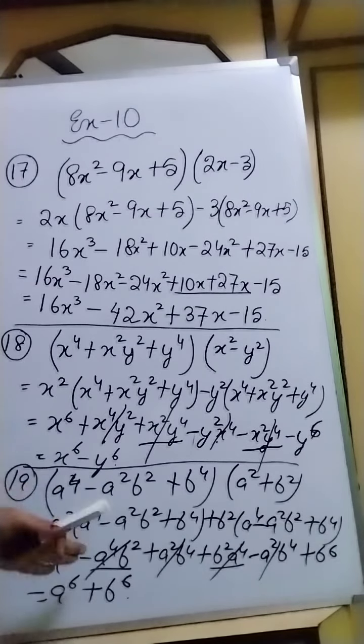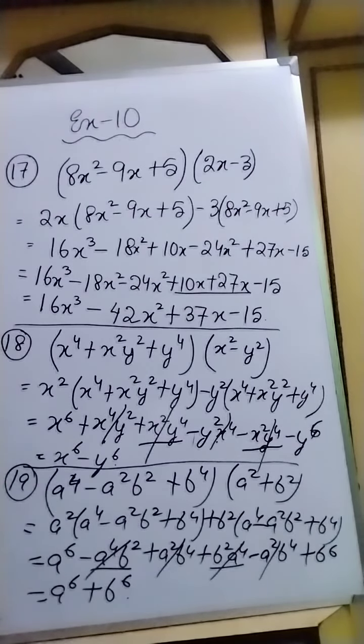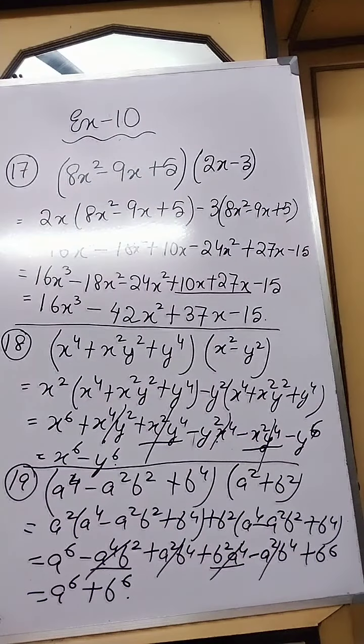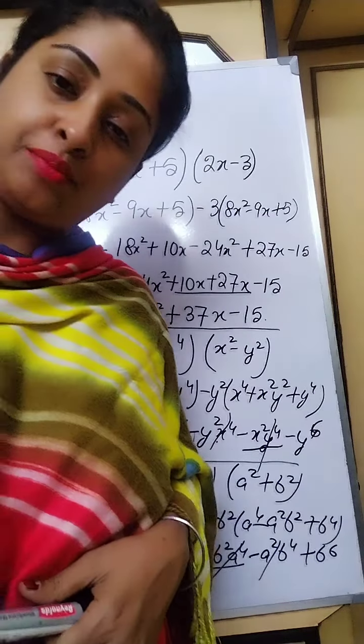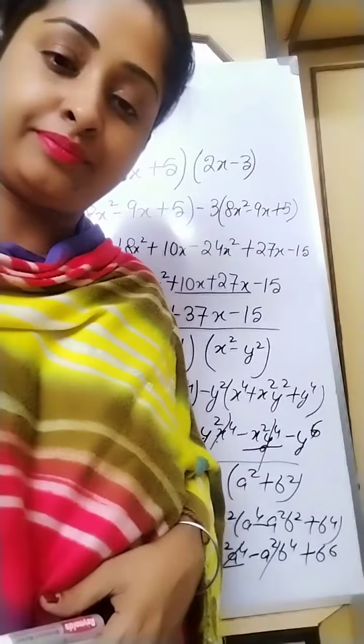You can see sums 18 and 19 are almost similar, just having different variables — 18 is with x and y, and 19 is with a and b. So with this video I have solved 3 important sums. In my next video I will definitely come up with 3 more important sums. So till then, goodbye.